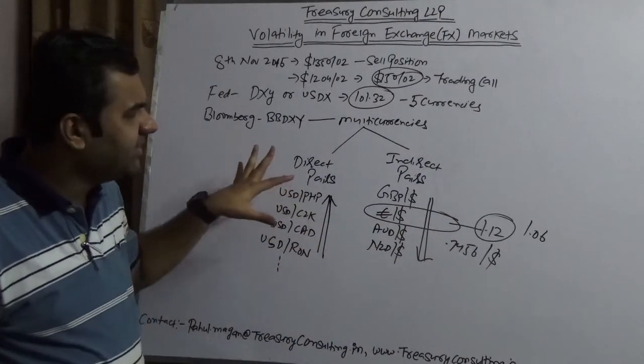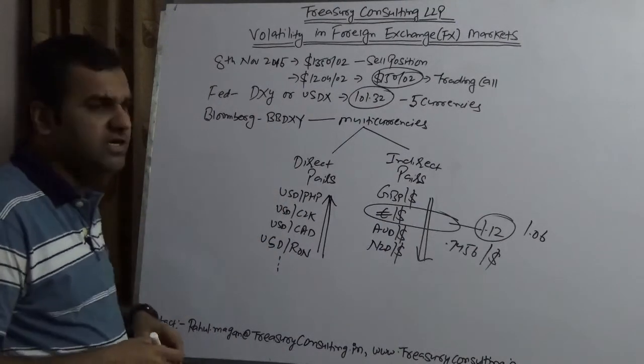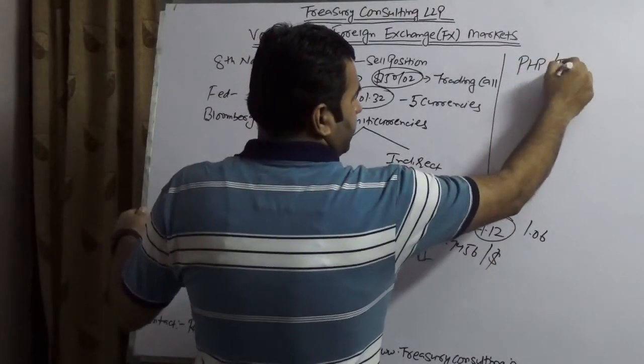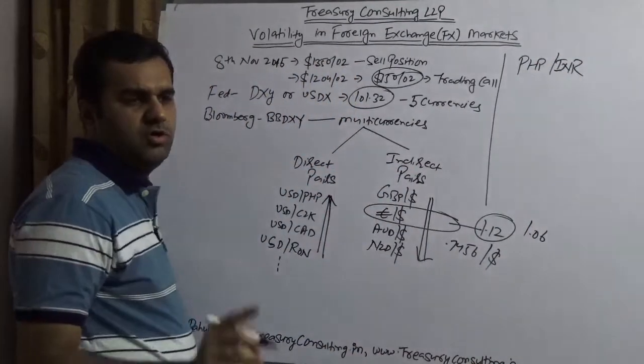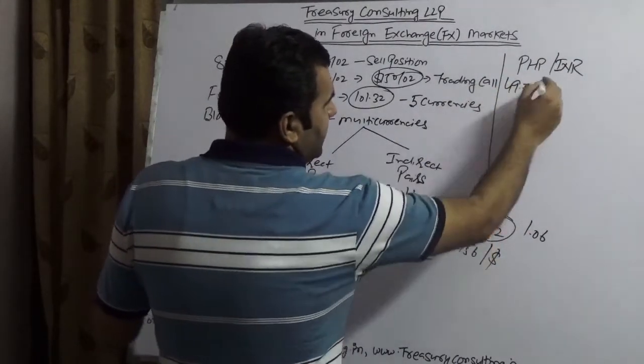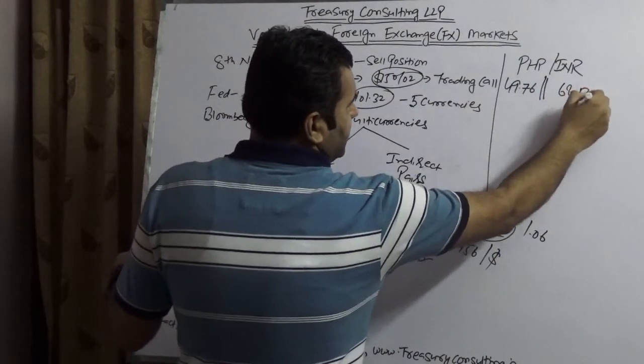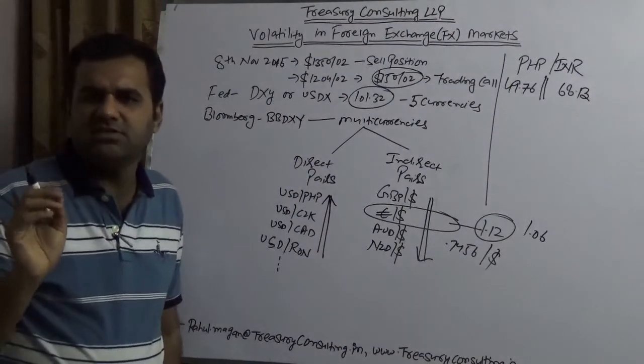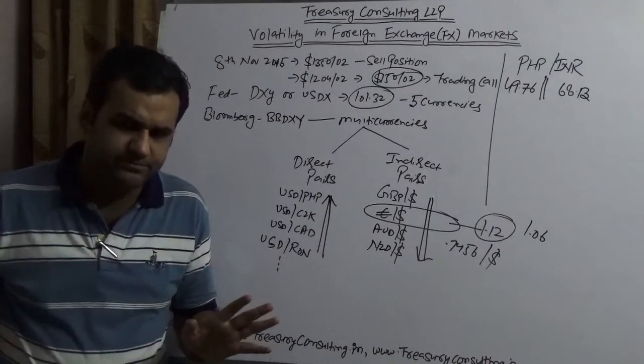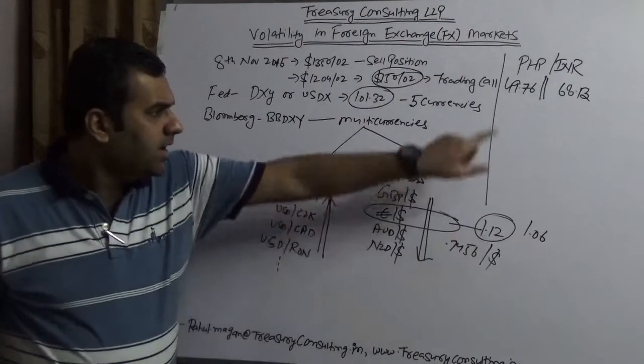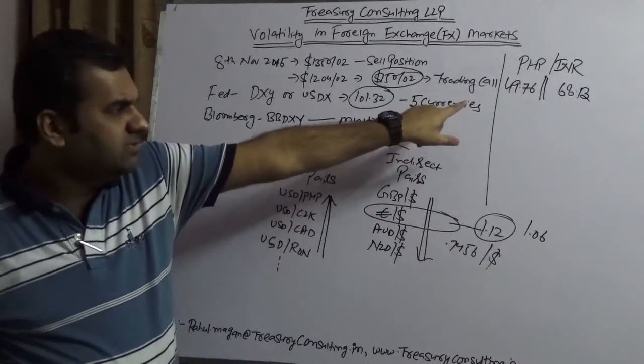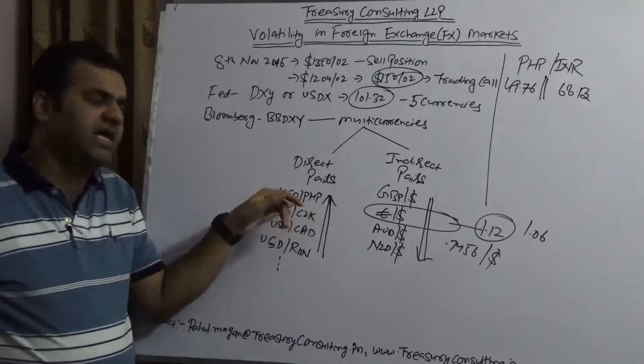Another great thing which is happening when it comes to Asian currencies and this is very much we need to take into consideration is Philippines Piso and Indian rupee. Philippines Piso is trading at 49.76 and Indian rupee is trading at 68.13. Philippines Piso 49.76 is extremely high. Politically speaking, Philippines now wants to be a Chinese ally. That is clear.